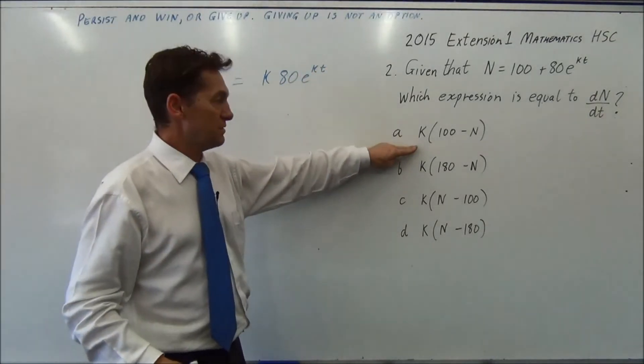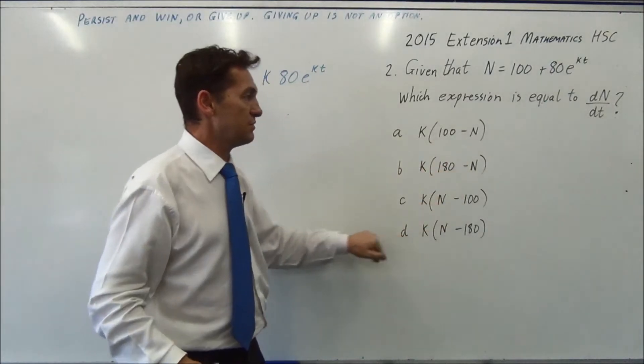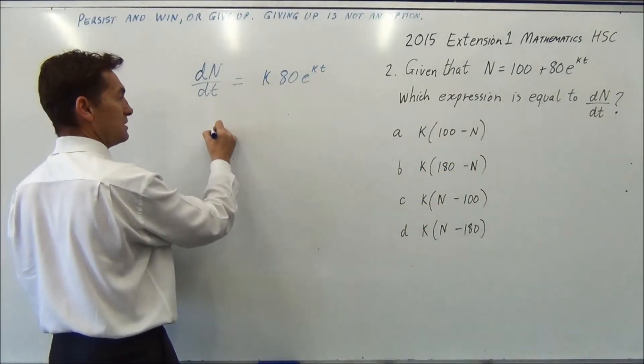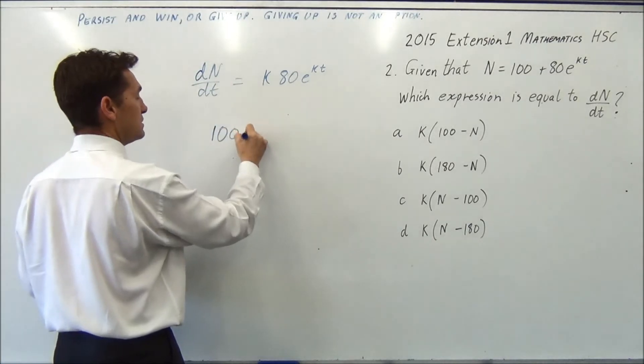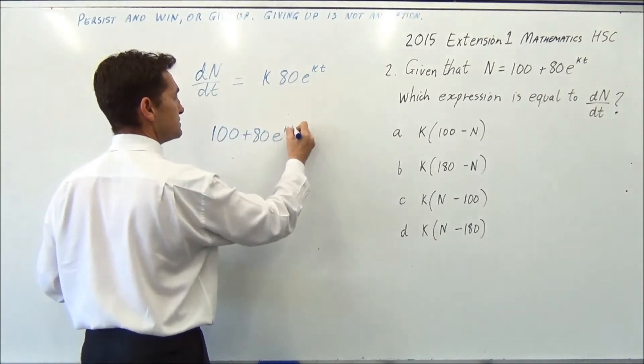Now you notice in the answer, they've got n's everywhere. So you have to put n back in. So n is 100 plus 80e to the kt.